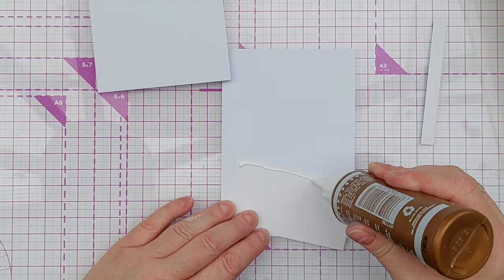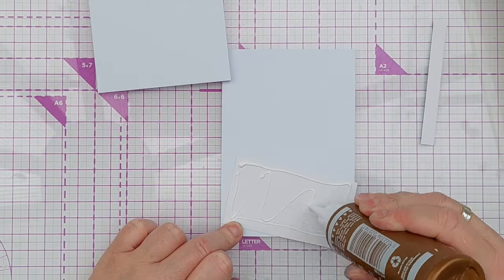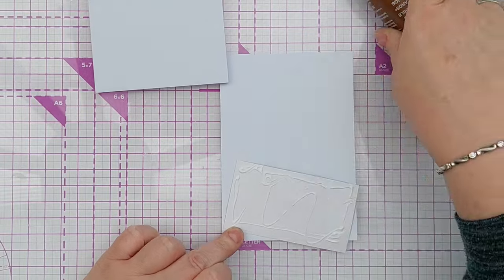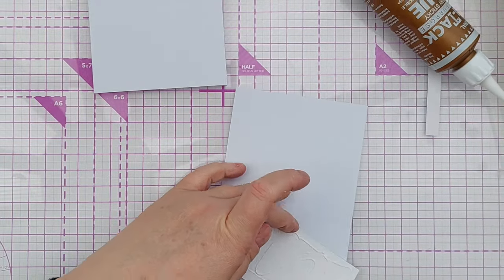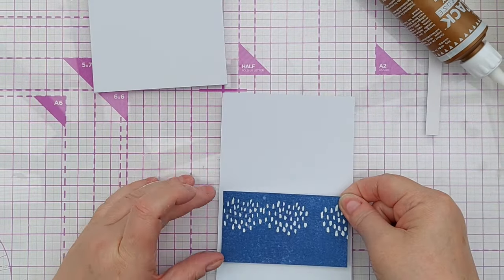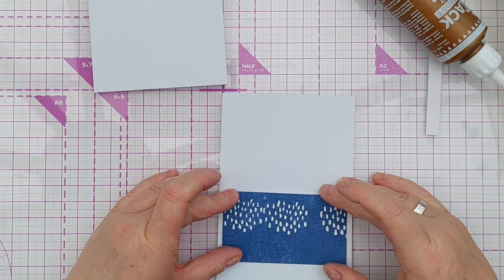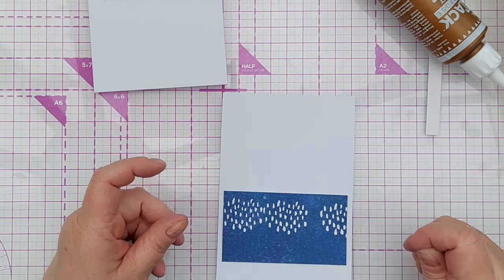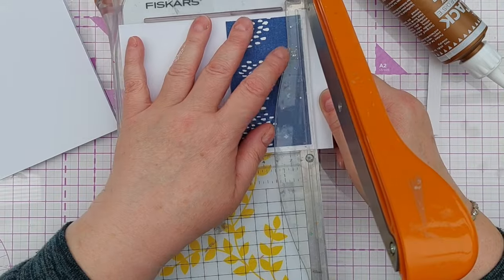So all I did was chop that little blue rectangle down a little bit so that I could mount it on a piece of white card stock and then add it to the front of a four by six inch card blank.